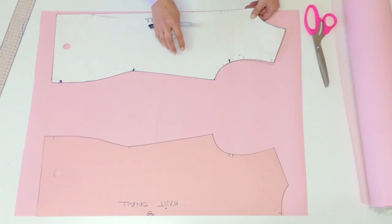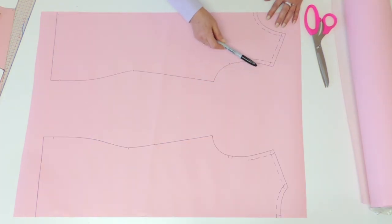So the first thing you do is to trace your back and front because we'll do the modification on both of them exactly the same way. I did retrace my block and as you can see I also traced the seam line because I'm using my block with the seam allowance included.